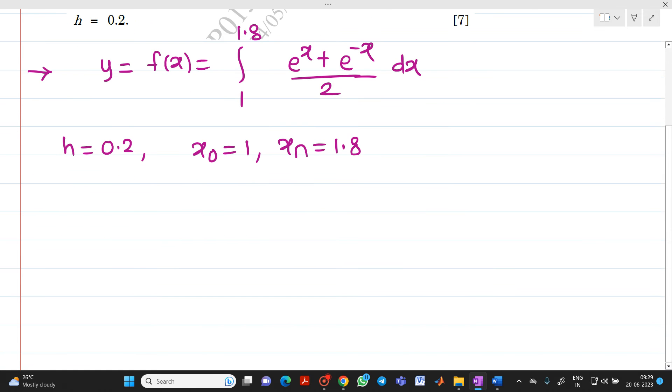So, from that, we will be able to find out number of intervals n will be equal to xn minus x0 divided by h. xn is 1.8, x0 is 1, h is 0.2. So, if you do it, you will get n equal to 4.